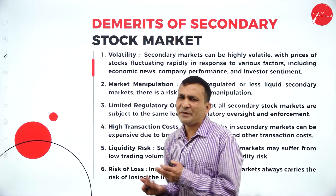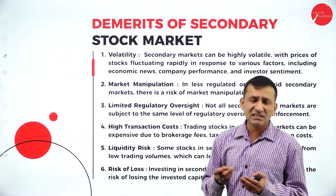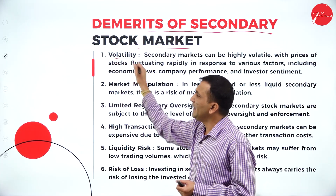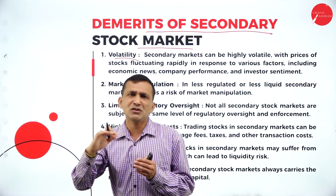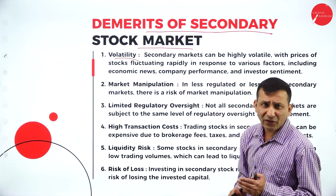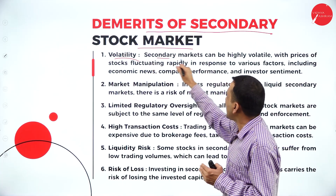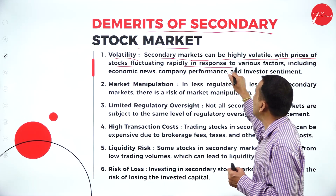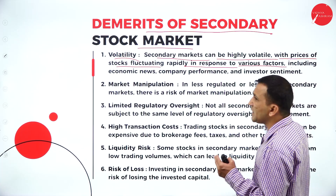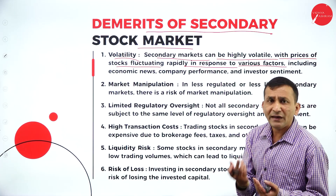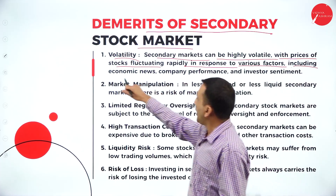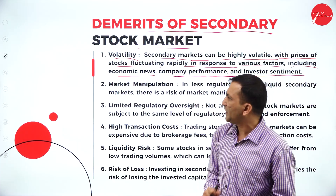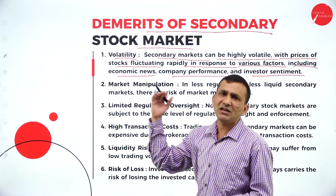Next: demerits of a secondary stock market. Where there is an advantage, there are also a few disadvantages. The first demerit is volatility — the price is not constant or fixed; we cannot give a 100% guarantee, so it keeps on fluctuating. The secondary market can be highly volatile, with the price of stocks fluctuating rapidly in response to various factors like demand, sales, financial position, economic news, company performance, and investor sentiment. There are too many factors connected that make the price not constant.